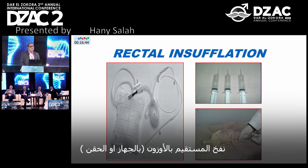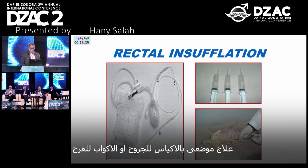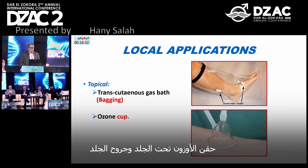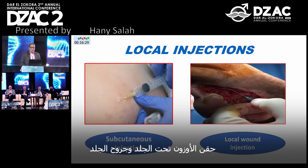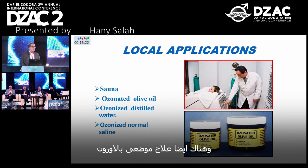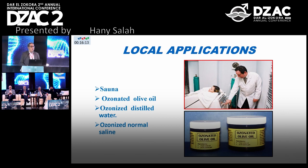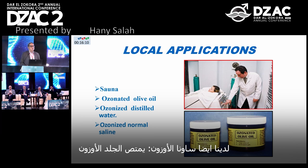Rectal insufflation for ozone therapy can be done using a set or syringes. We can also do local application for ozone, such as an ozone bag for wounds or ozone cups for ulcers. Ozone can also be injected into subcutaneous tissue or used for local wound injection. Other local applications include ozonated olive oil or ozonated distilled water for wounds, and ozone sauna for transcutaneous ozone absorption.